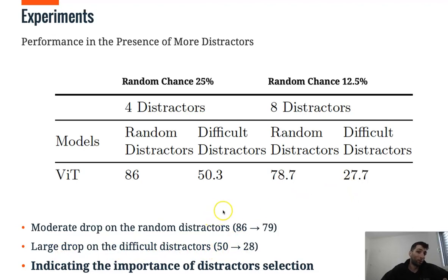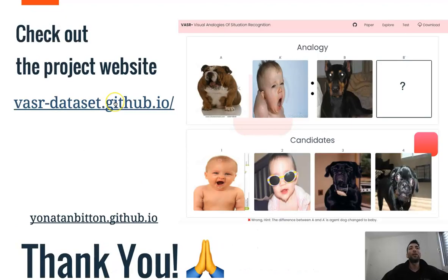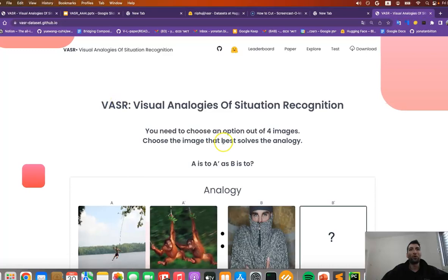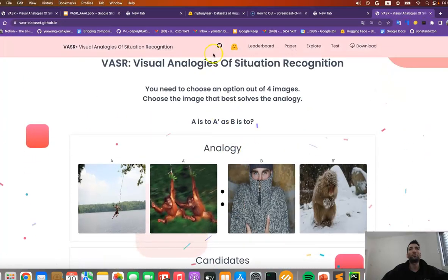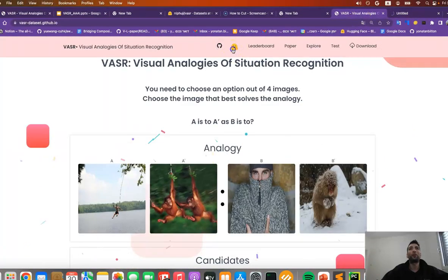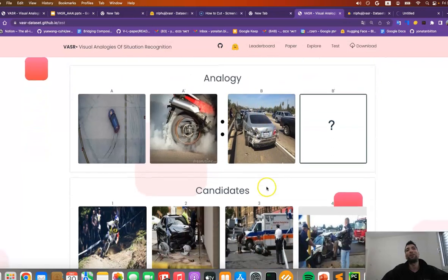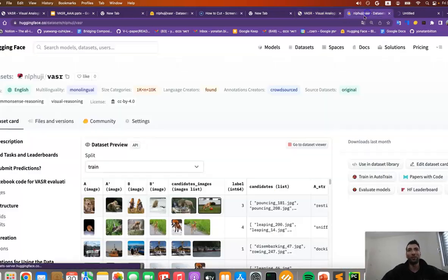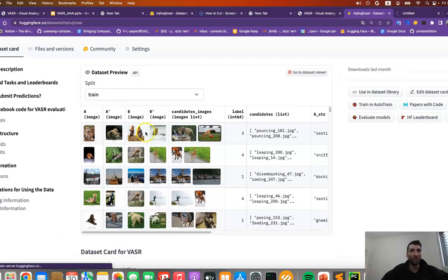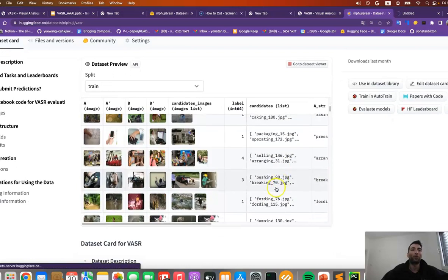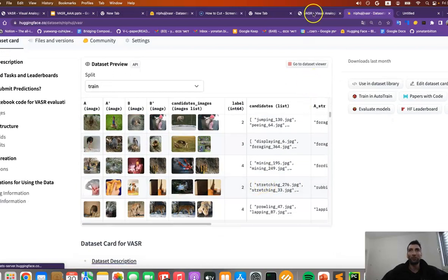Take a look at the project website where you can interact with the dataset. See the code. Hugging face integration. You can see the paper, leaderboard. Test yourself on how well you can solve analogies. By the way, this is the hugging face integration of the dataset where everything is available to download and to display.